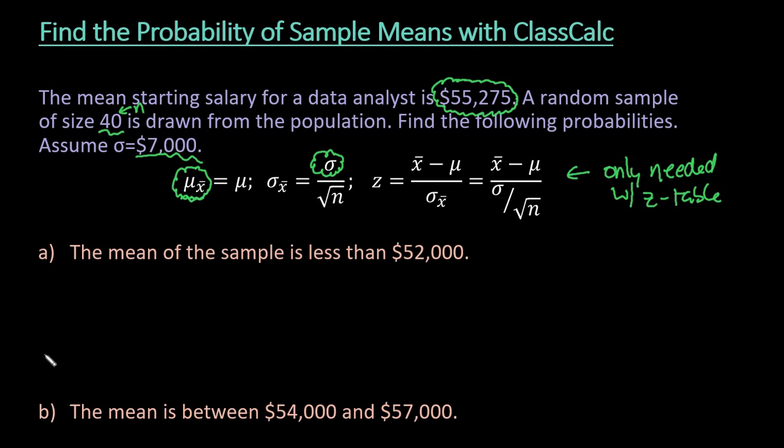Alright, so with this, we are dealing with the normal distribution. So we're going to have a distribution that is set up where it's going to be centered at the mean, so the mean is 55,275. And then my standard deviation, so basically to go to the right, I would add this, and to the left, I would subtract it. I would take the 7,000 divided by the square root of 40. So that's what we would be counting by on the base. The nice thing is, with using ClassCalc, I can just plug this in as my mean, and this as my standard deviation, exactly as it is, and then we're going to use CDF.